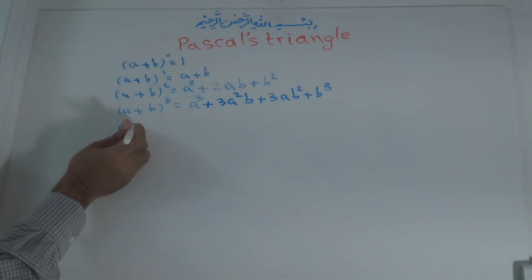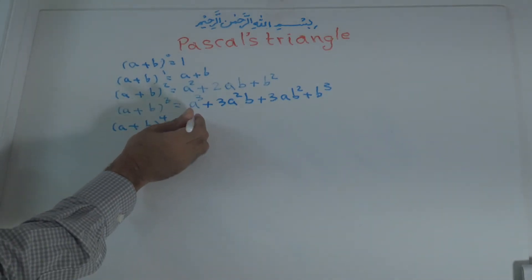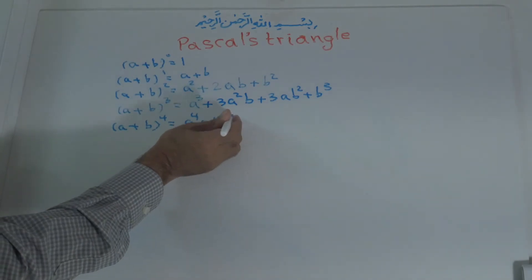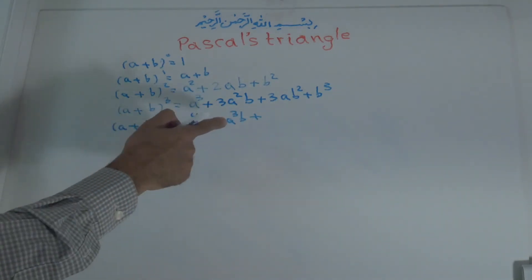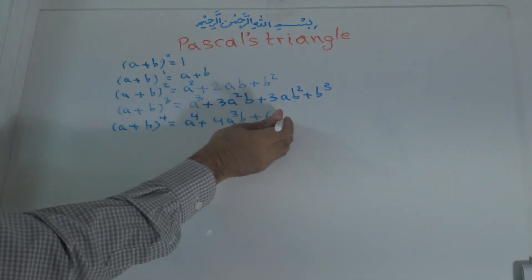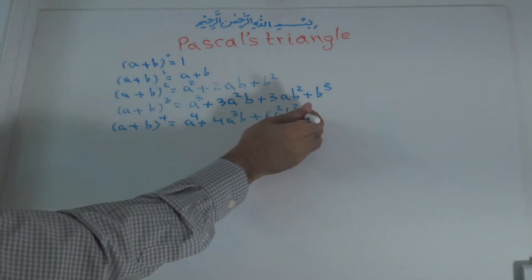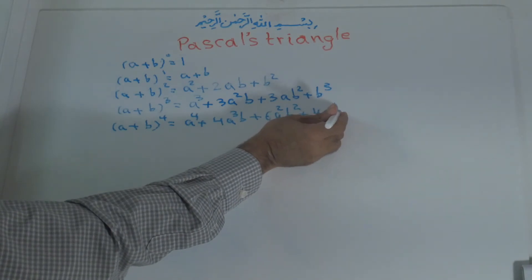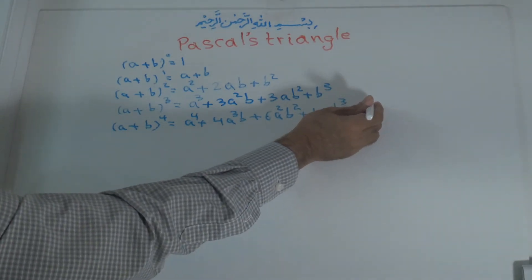A plus b to the power of 4 is equal to a to the power of 4, plus 4 a to the power of 3 b, plus 3 times 4 is 12, 12 divided by 2 is 6, a to the power of 2 b to the power of 2, plus 4 a b to the power of 3, plus b to the power of 4.